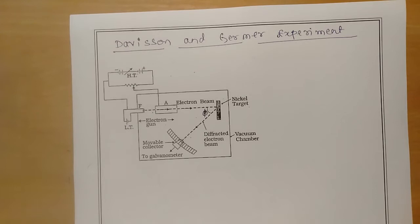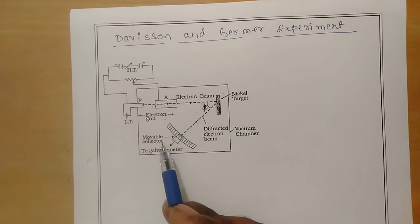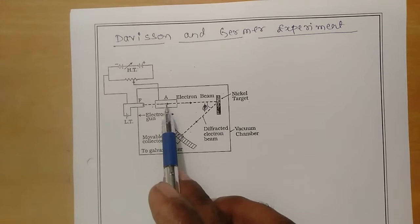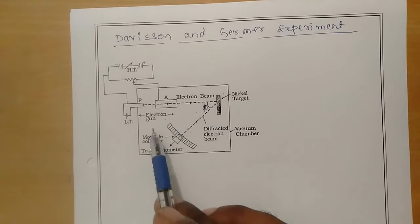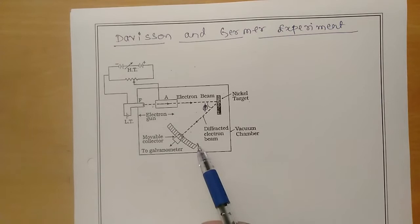By this experiment we have to show that the potential difference with which you are accelerating and the wavelength obtained correspondingly will be equal to the wavelength obtained in this particular experiment. Now, what we are going to do is measure the intensity of the scattered beam along different directions. The electron beam coming out of the cylinder or anode A is made to fall on the nickel target, and the electron beam is scattered in all possible directions. This movable detector on a graduated scale will measure the intensity of the scattered electron with respect to the scattering angle.